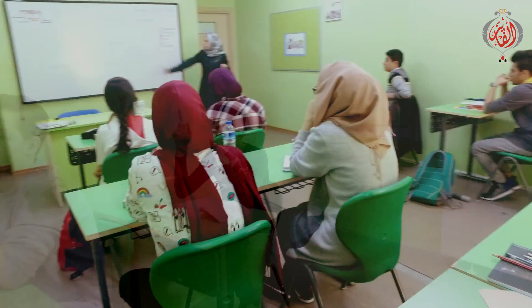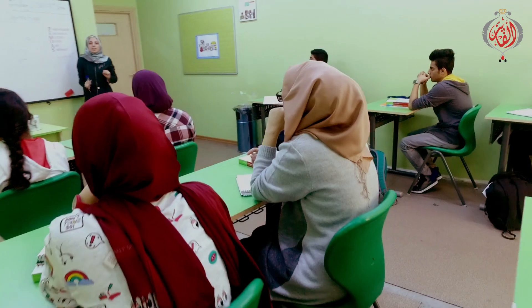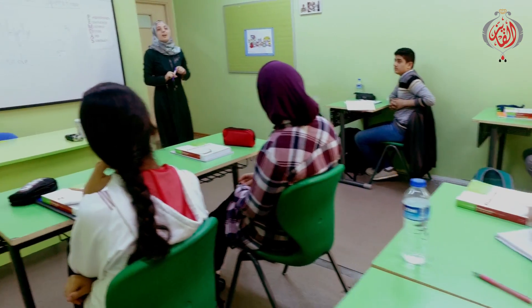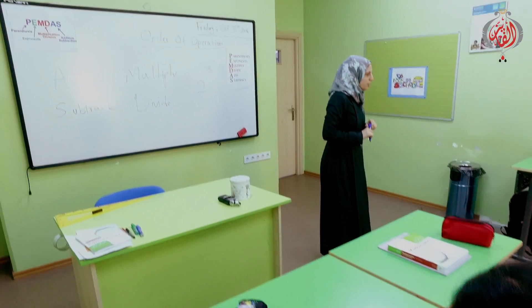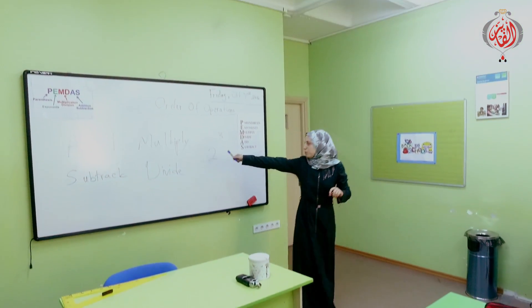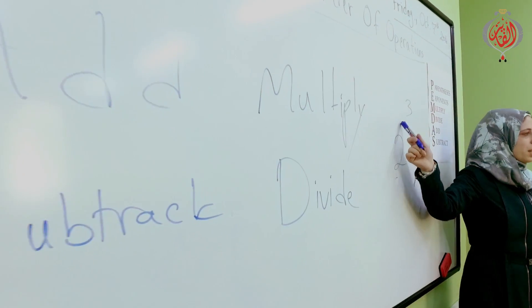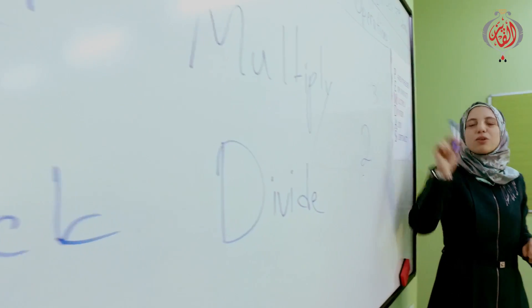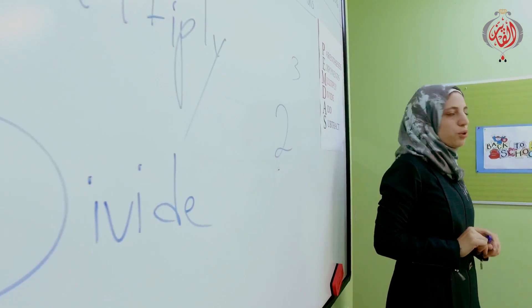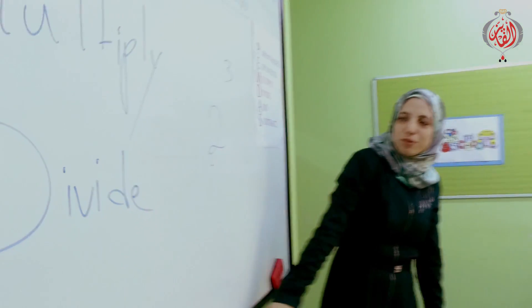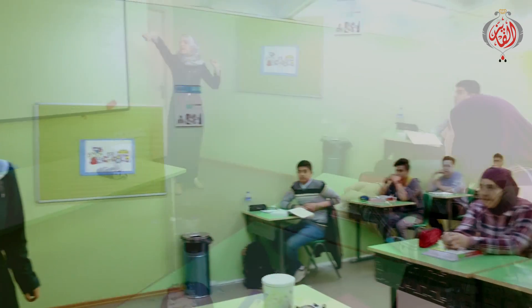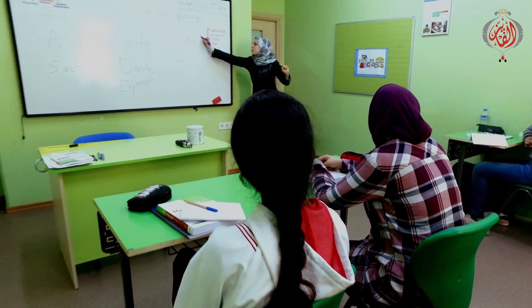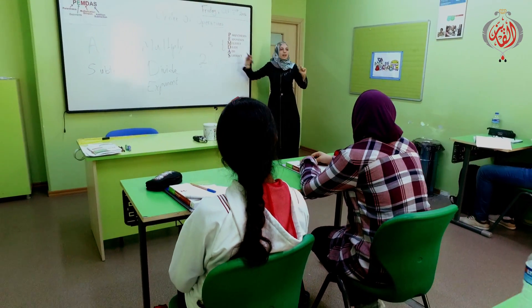Please raise your hand. What do we call the three? Three is called exponent. And what do we call the two? The number here we call it base and the number here we call it exponent. So we have also exponent. The exponents we have, we apply and divide.